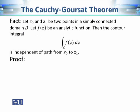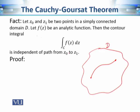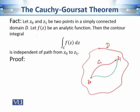Let's see how the Cauchy-Goursat theorem implies independence of path. Say we have a simply connected domain d with a contour c₁ from point z₀ to z₁. We want to prove that if we take any other contour from z₀ to z₁, called c₂, then the contour integral along c₁ equals the contour integral along c₂. We need to show that the integral along c₁ equals the integral along c₂.